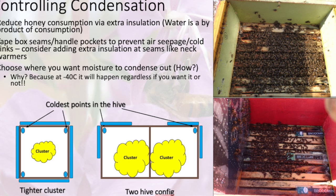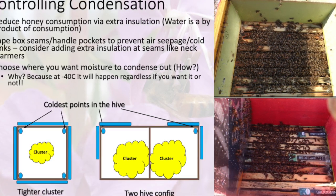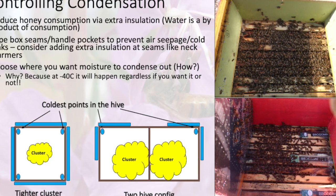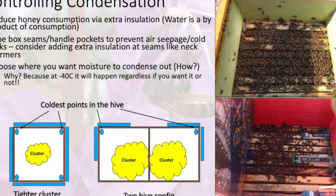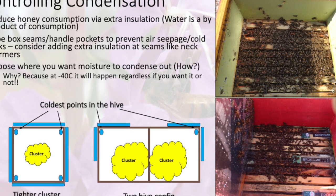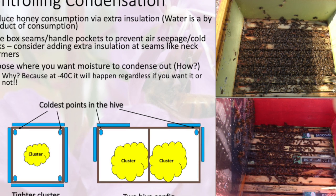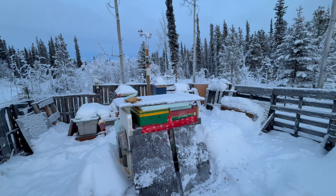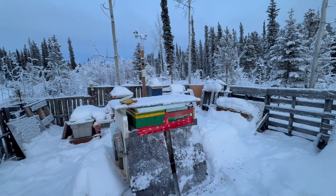If you notice, on my Broodminders I clip off the pieces of plastic because I don't want them sticking out — that plastic tab sucks in micro air around where it exits, creates micro leaks, and is a heat sink. I've trimmed them all so I just have the sensor and not that plastic tab.